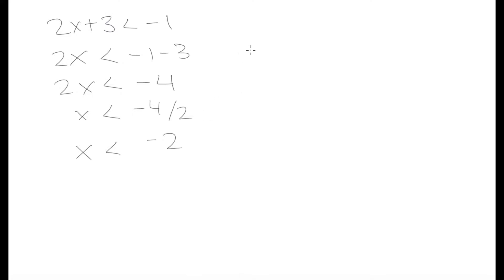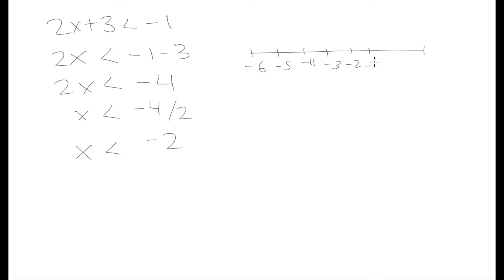If we were to draw this on a number line, let's write it down here. We have negative 6, negative 5, negative 4, negative 3, negative 2, negative 1, 0, 1, 2, 3, and so on. This inequality says our value of x is going to be less than negative 2, but not equal to negative 2.